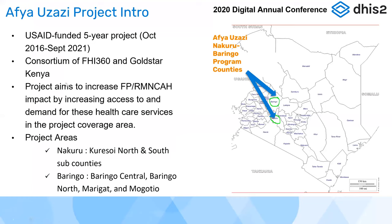The Afio Uzazi project is a USAID-funded five-year project operational from October 2016 to September 2021. It's a consortium of FHI 360 and Gold Star Kenya. The project aims to increase family planning, reproductive, maternal, newborn, child, and adolescent health impact by increasing access to and demand for these healthcare services. We operate in two major regions in Kenya: Baringo County and Nakuru County, specifically in the sub-counties of Kuresoe North, Kuresoe South, Baringo Central, Baringo North, Marigat, and Orgotio.